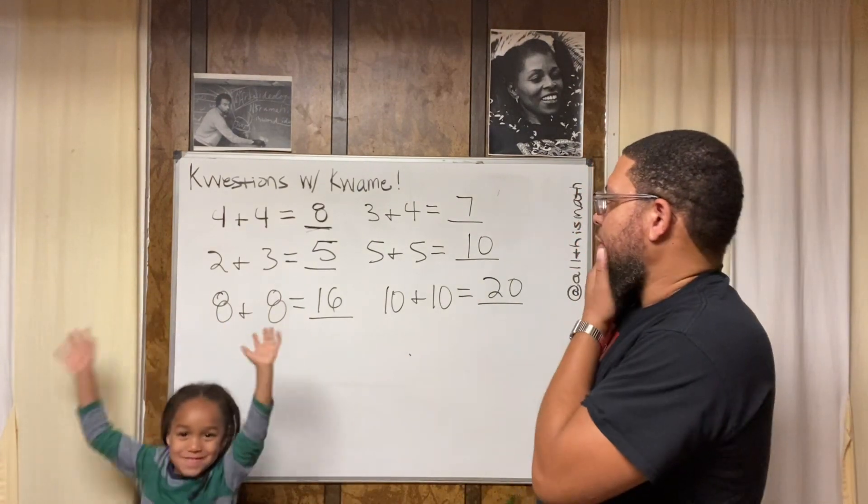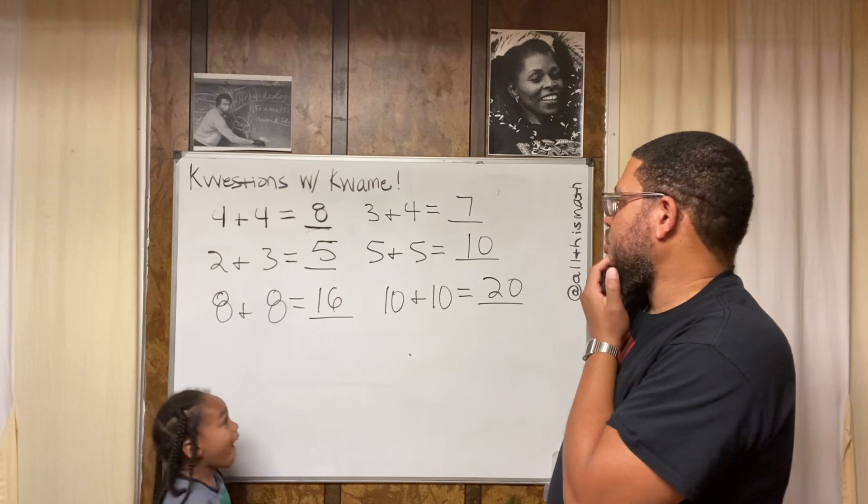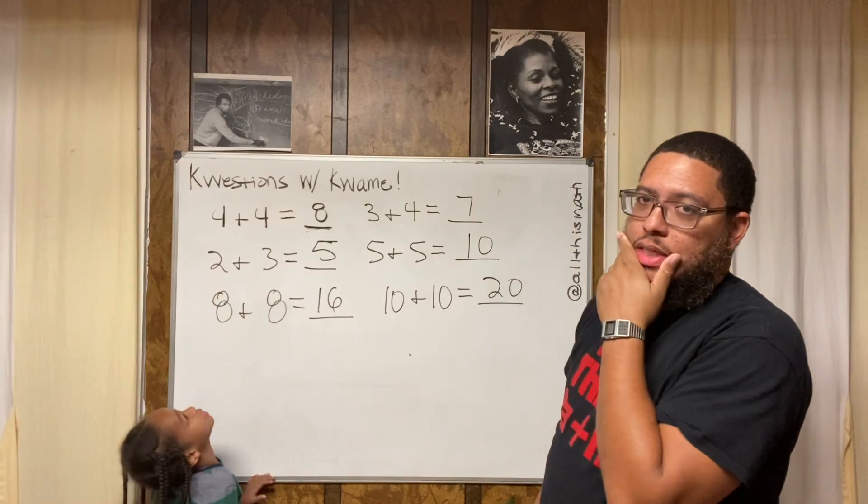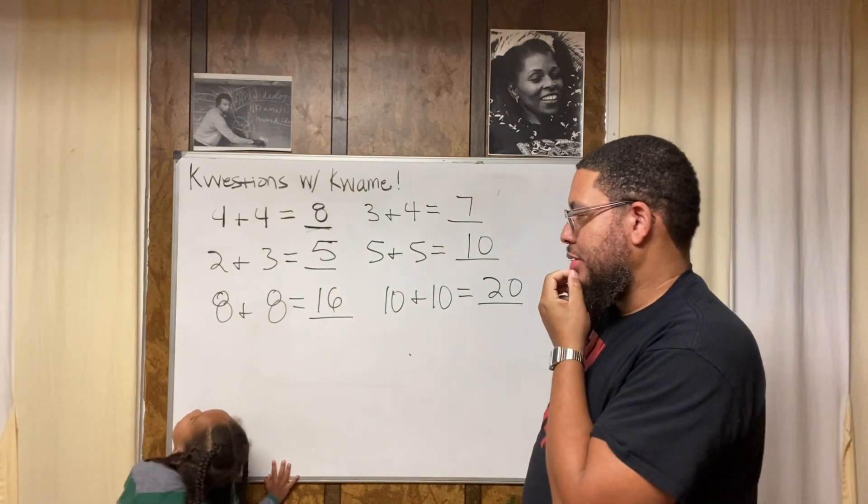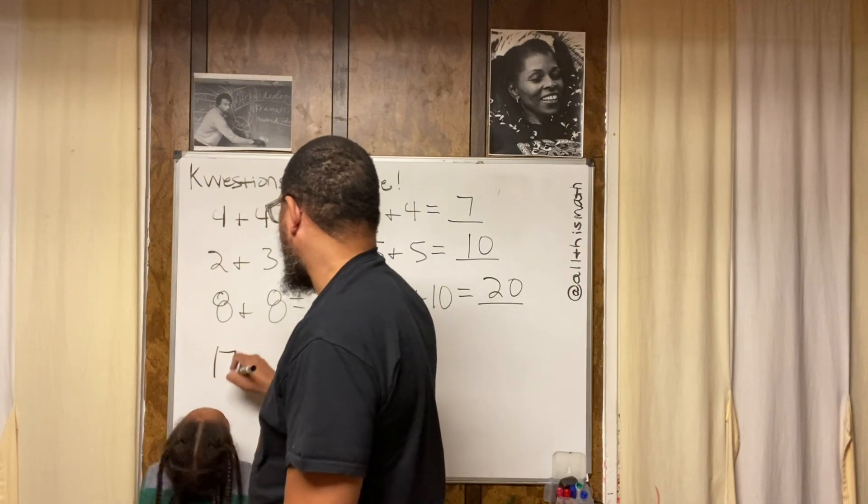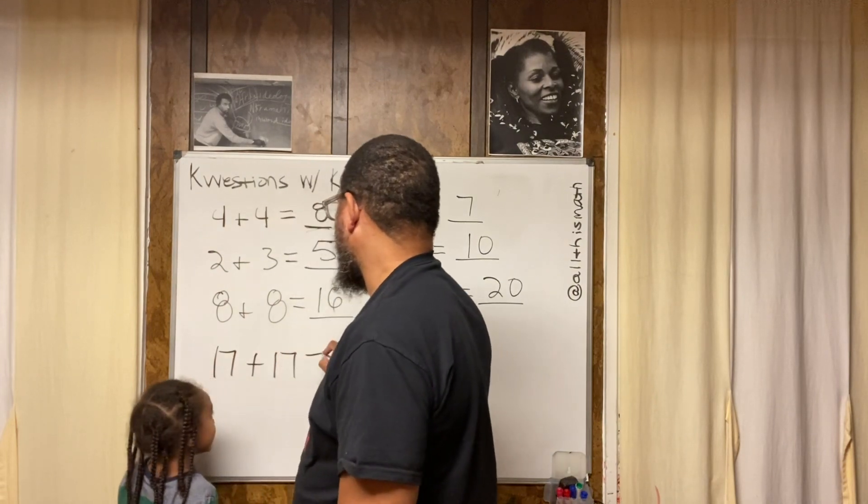Kwami, stand up. Everybody can see you. He's standing on the chair. So look, ten plus ten is twenty. Alright, so look Kwami, let's do one more. We did six questions already. Let's do one more. One more. What's the last question you got? I got seventeen plus seventeen. Oh, okay, okay. You're swinging for the fence now, brother. Okay, I like it. I like your style. Alright, seventeen plus seventeen. You know what that is?